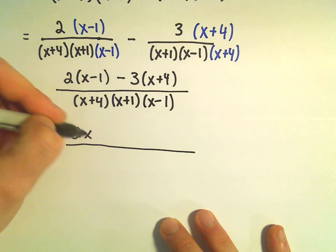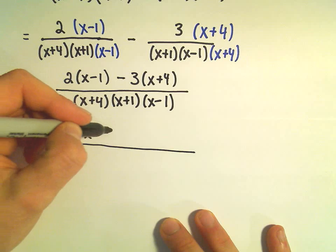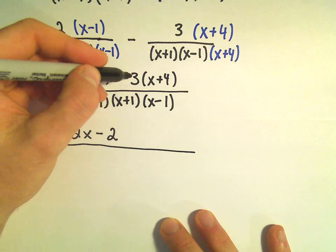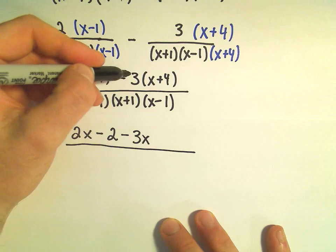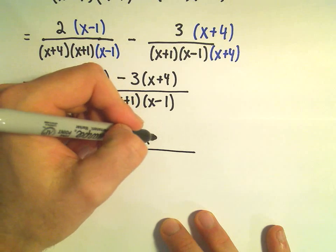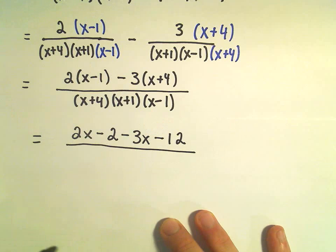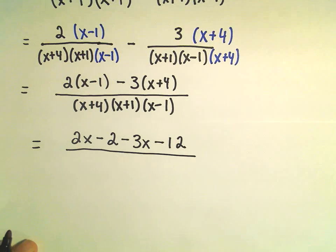So, we'll get 2 times x, which will be 2x. We'll get 2 times negative 1, which will be negative 2. Then we have negative 3 times x, which is negative 3x. And then we have negative 3 times positive 4, which is going to give us a negative 12.